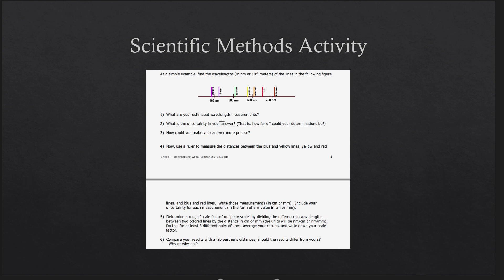You're going to answer six questions based on these. The first question asks for the estimated wavelength measurements. All you do is take the scale given here — 400 nanometers, 500 nanometers, 600, and 700 — and estimate on your answer sheet where each of those lines falls. There are seven lines, so you'll have seven numbers. Give them in nanometers and always include the units. For example, green might be around 510 nanometers — without the unit, it is not correct.